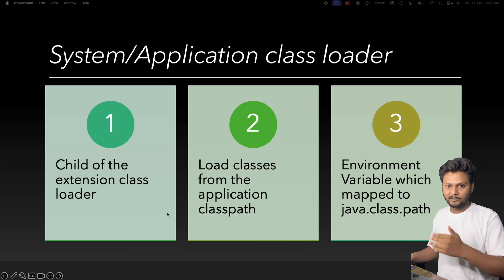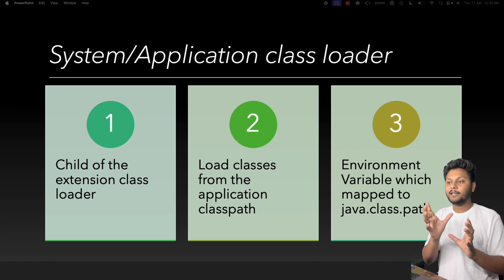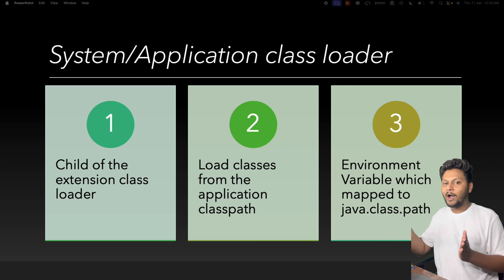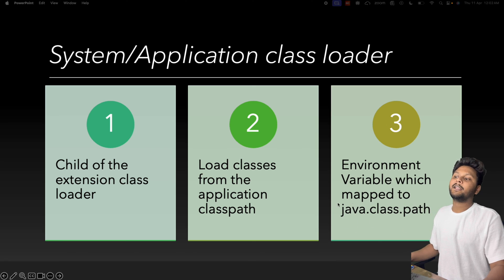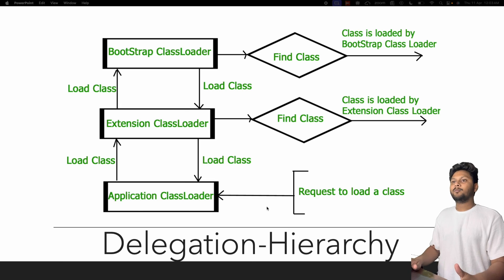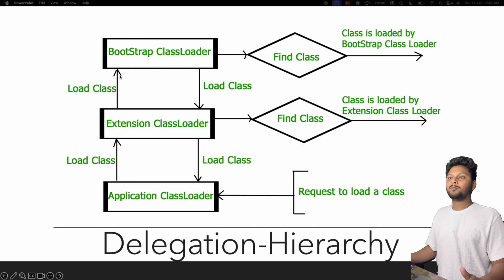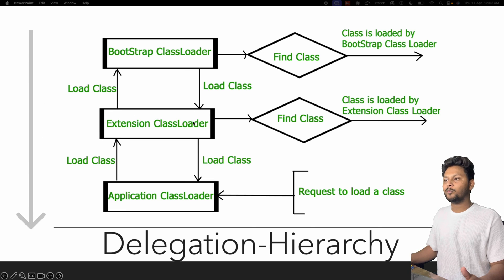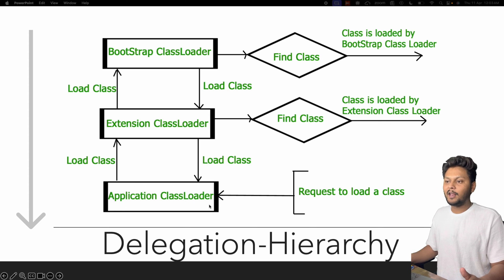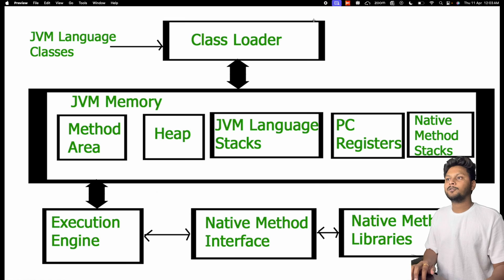The hierarchy is: bootstrap at the top, then extension, then system/application class loader. The system class loader loads classes from the application class path — an environment variable where we declare the class path of the application. The delegation hierarchy means bootstrap tries first; if not found, extension tries; if not found, application class loader finds it.